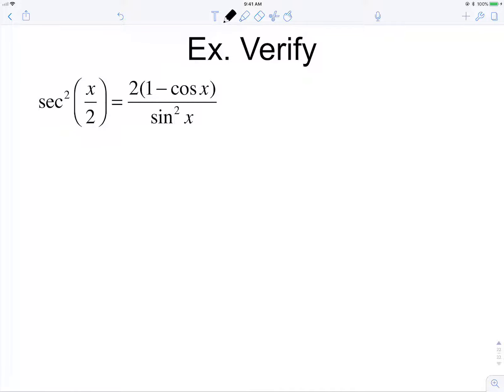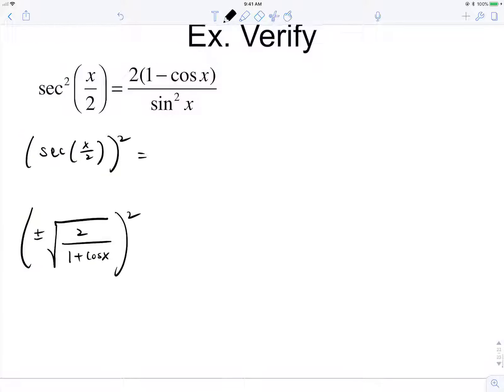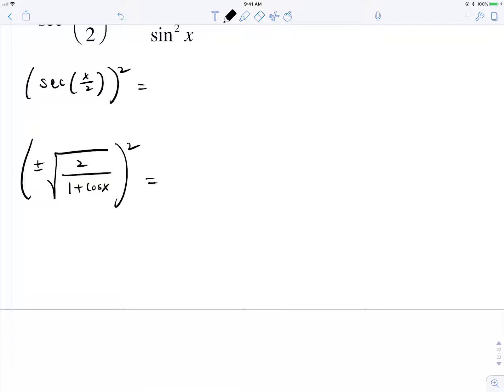So secant squared of x over 2. So that's the same thing as secant of x over 2 squared, which, secant is the reciprocal of cosine. So the half angle identity for cosine, but flipped, will be plus or minus the square root of 2 over 1 plus cosine x squared. Or is it minus? No, it's plus. This is actually just going to be 2 over 1 plus cosine.